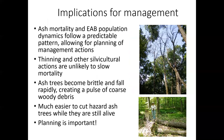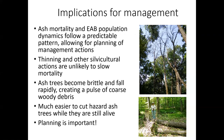The implications for management from our monitoring work are that ash mortality and emerald ash borer population dynamics follow a really predictable pattern, which allows us to plan management actions. We showed that ash density doesn't actually slow that initial wave of ash mortality in the same way as other systems, so thinning and silvicultural actions are unlikely to slow it. The ash trees do become brittle and fall down rapidly, creating a pulse of coarse woody debris. And of course, it's easier to cut hazard ash trees while they're still alive, so planning is important — knowing whether you're going to remove trees ahead of time or let them die standing.